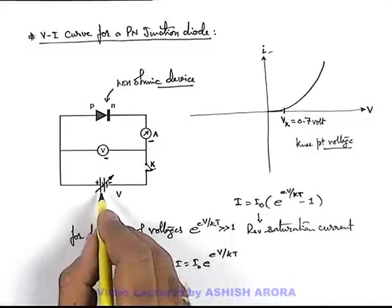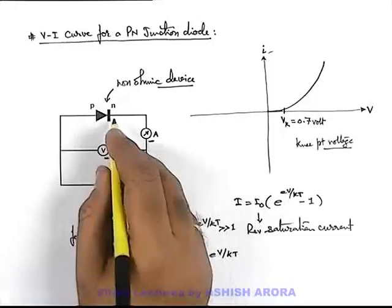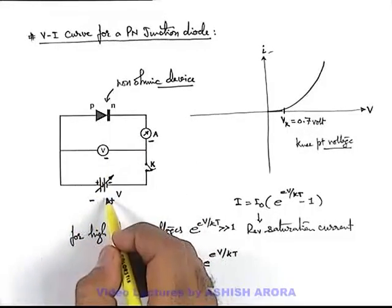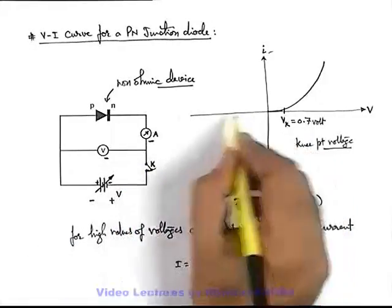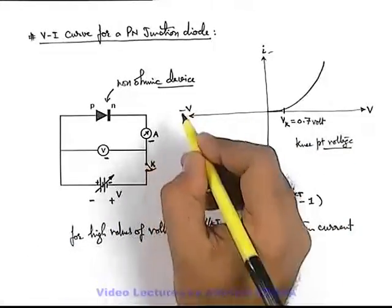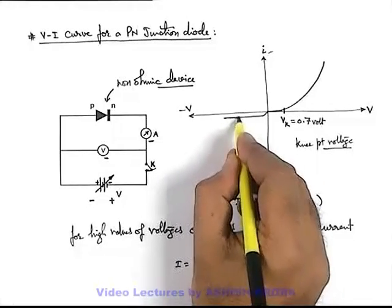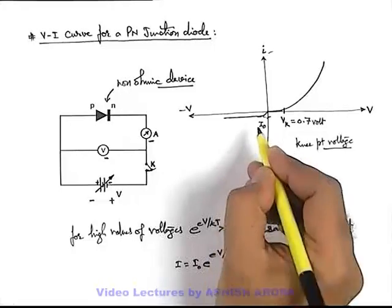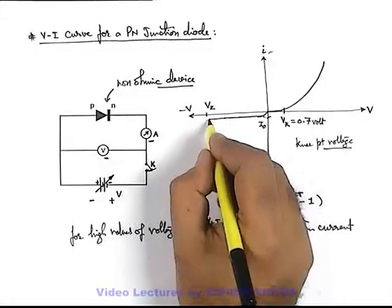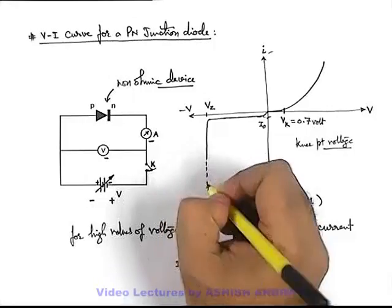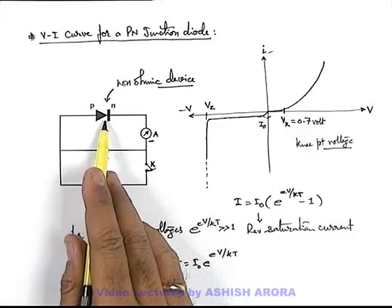If we reverse the battery, connecting the negative terminal on the P side and positive on the N side, this junction will be reverse biased and the value of current will be very low due to minority charge carriers. In reverse biasing, if we increase the voltage, a very small value of current flows which almost remains constant. The value is equal to reverse saturation current I₀, and it goes on up to a specific voltage Vz, at which suddenly current increases to very high values.